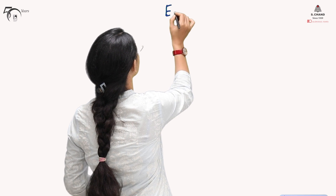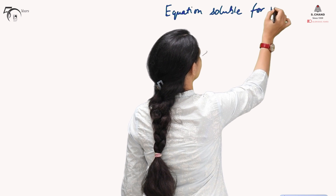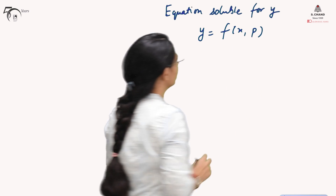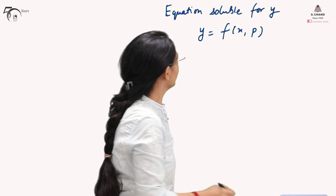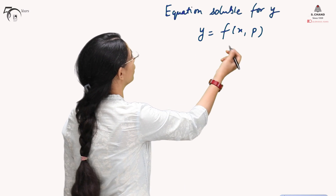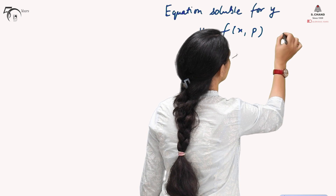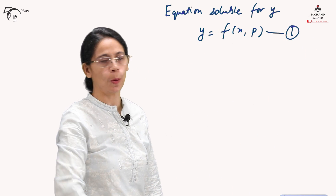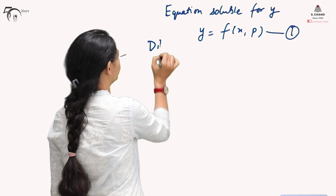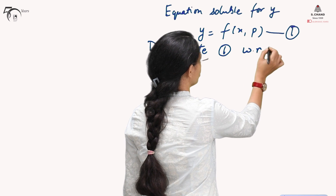We will start with the solution technique for the equation which is soluble for y and which is of first order but not of first degree. When we say that it is soluble for y, we consider it is given in a specific form where y is the dependent variable, x is the independent variable, and p is the derivative. Let us say the given differential equation is in this form — call it equation 1. To obtain the solution, we will differentiate equation 1 with respect to x.